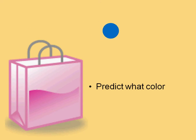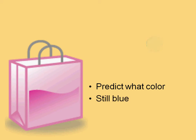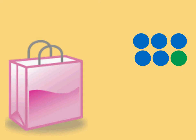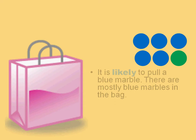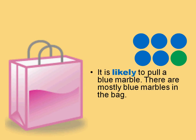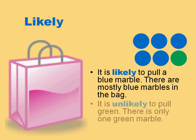So why does that happen? Why do I keep pulling blue marbles? Well, I have five blue marbles and only one green, so I am probably going to pick a blue marble. So we say it is likely that we will pick a blue marble because there are mostly blue marbles in the bag. We can also say it is unlikely to pull a green marble because there is only one green marble.